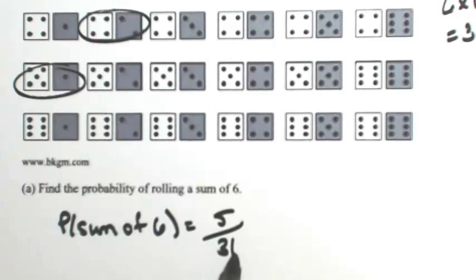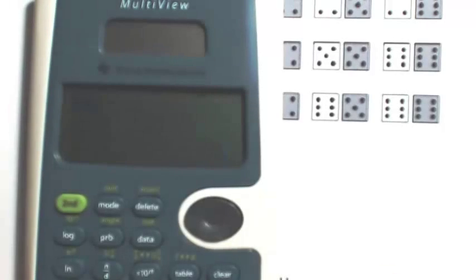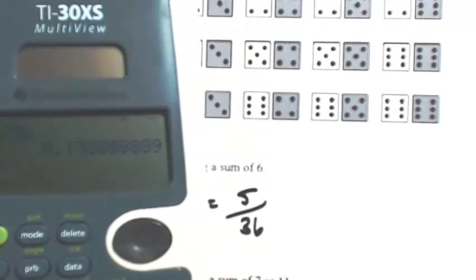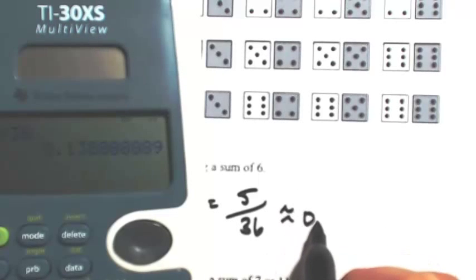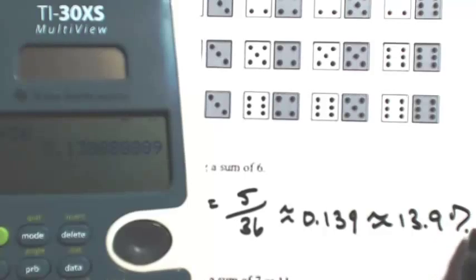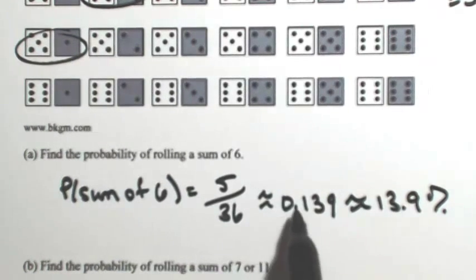So five out of 36. If we divide that out, we get 0.13 and then the eight's repeating. So this is about 0.139 or about 13.9% chance that you'll get a sum of six.